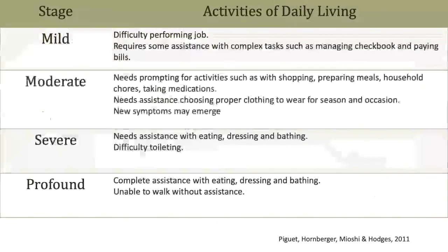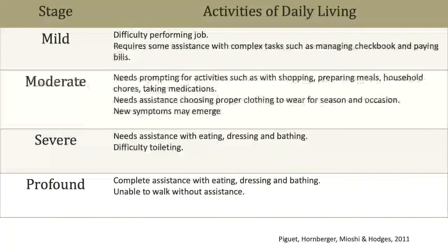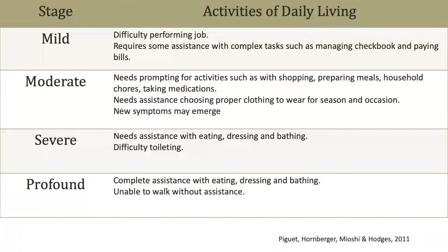In the mild stage, there are subtle changes that are typically restricted to the domain of difficulty that brought the patient into the doctor's office. For example, there may be difficulty with performing tasks at work. At home, you may see more complex activities like paying bills and managing checkbooks are problematic. In the moderate stage, activities now become more of a collaborative effort. You may notice that your loved one needs prompting through activities, you may have to supervise dressing, and you may have to lay out your loved one's clothes.